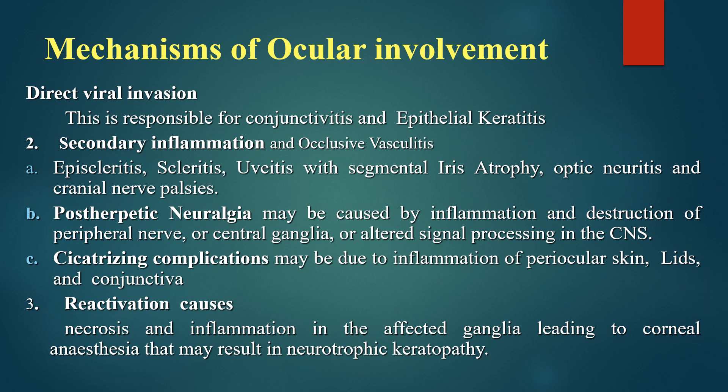Cicatrizing complications may be due to inflammation of periocular skin, lids, and conjunctiva. Reactivation causes necrosis and inflammation in the affected ganglia, leading to corneal anesthesia that may result in neurotrophic keratopathy.